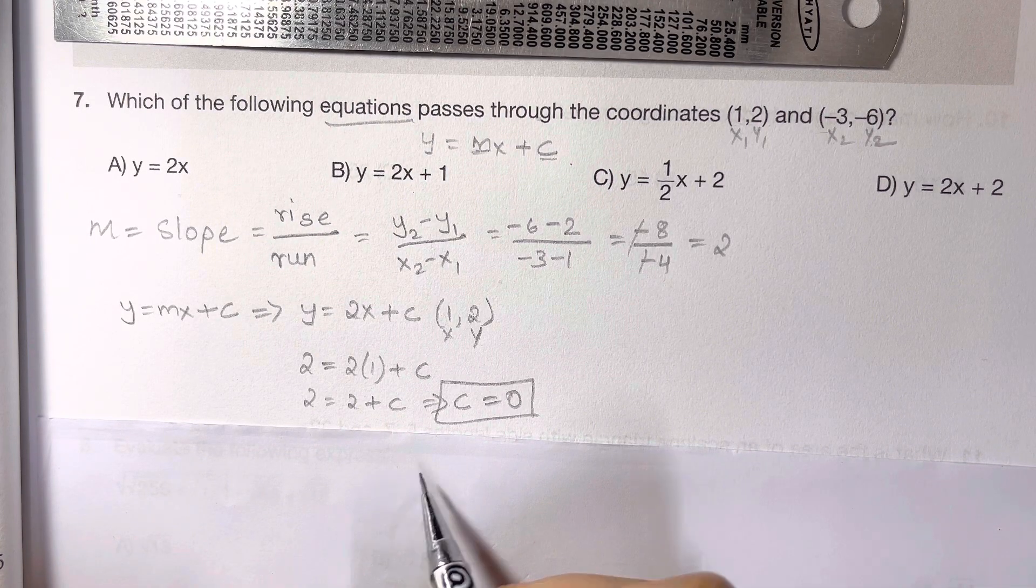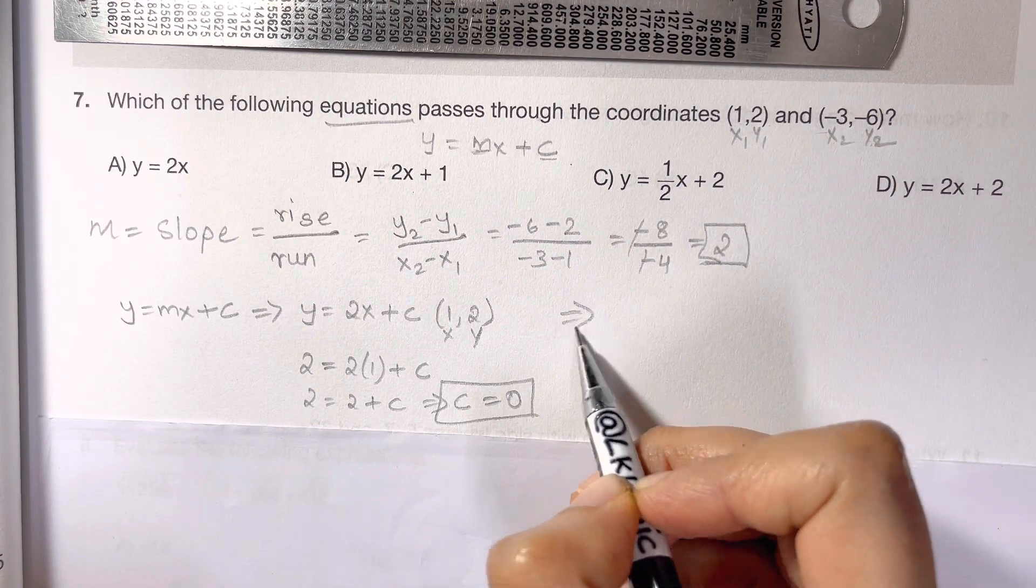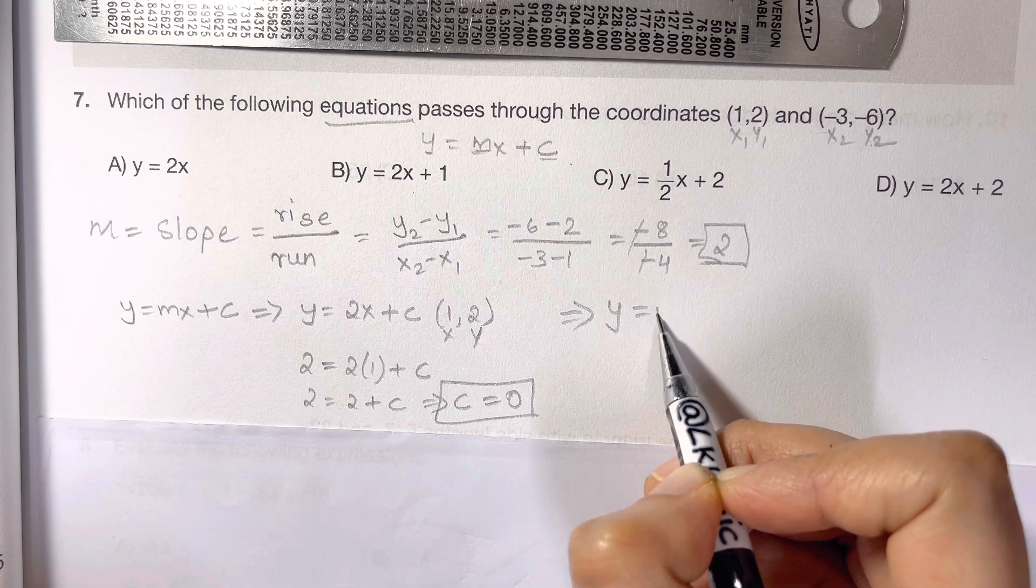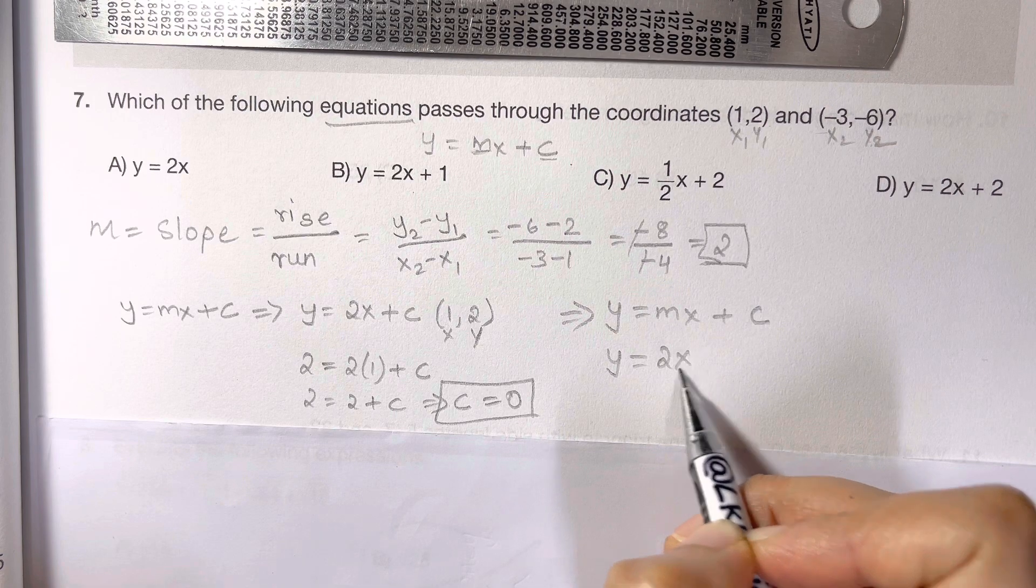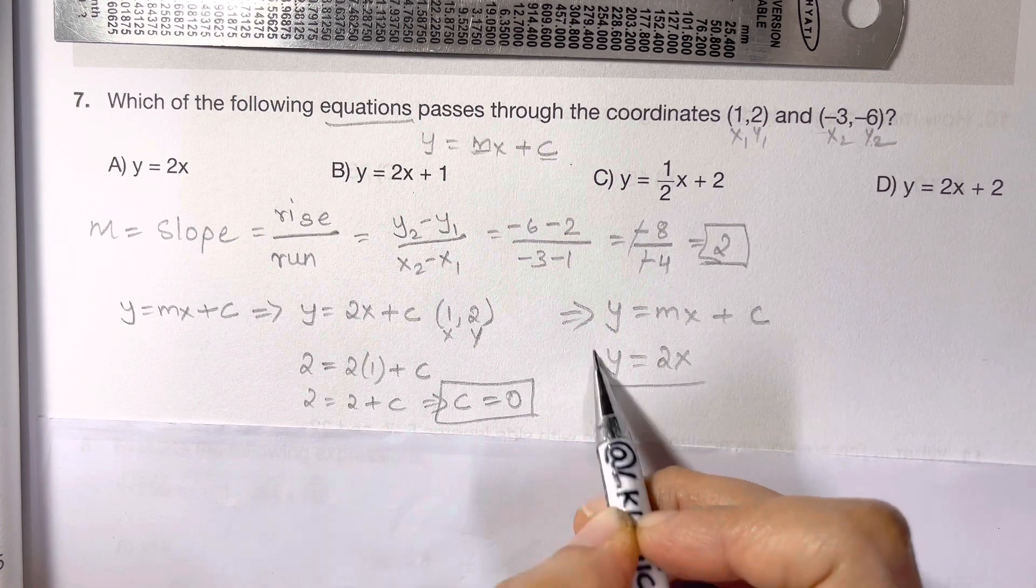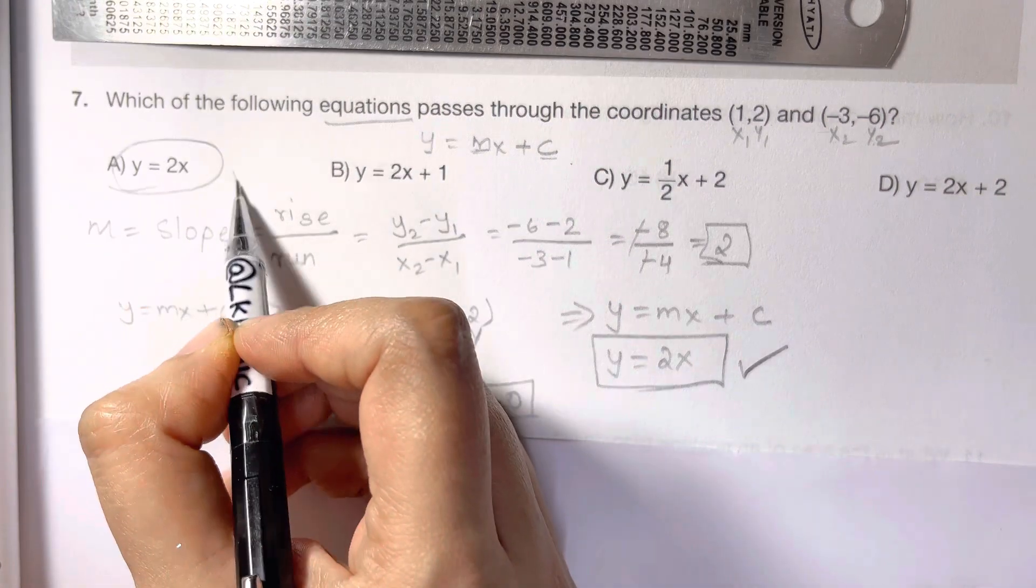So your y-intercept is 0 and your slope is 2. So let's write down our equation which is in the form of y equals mx plus c. So it's y equals 2x, and as c is 0, that's it, that's your equation and the choice A.